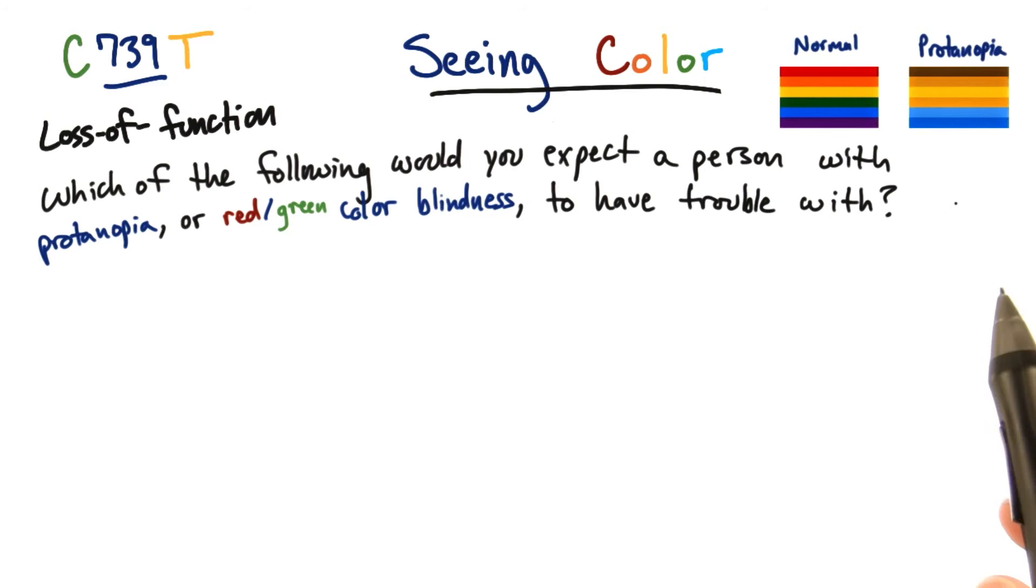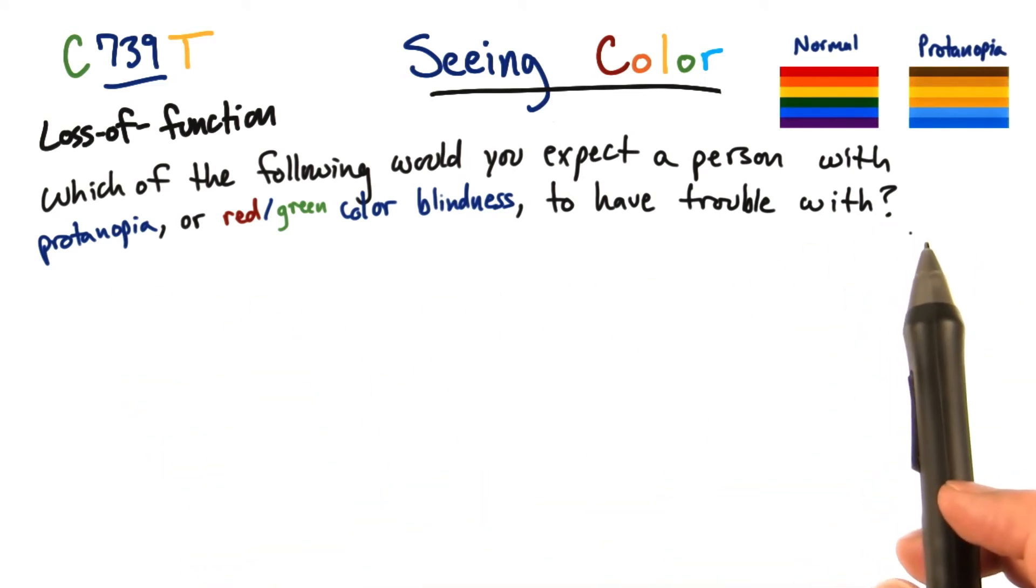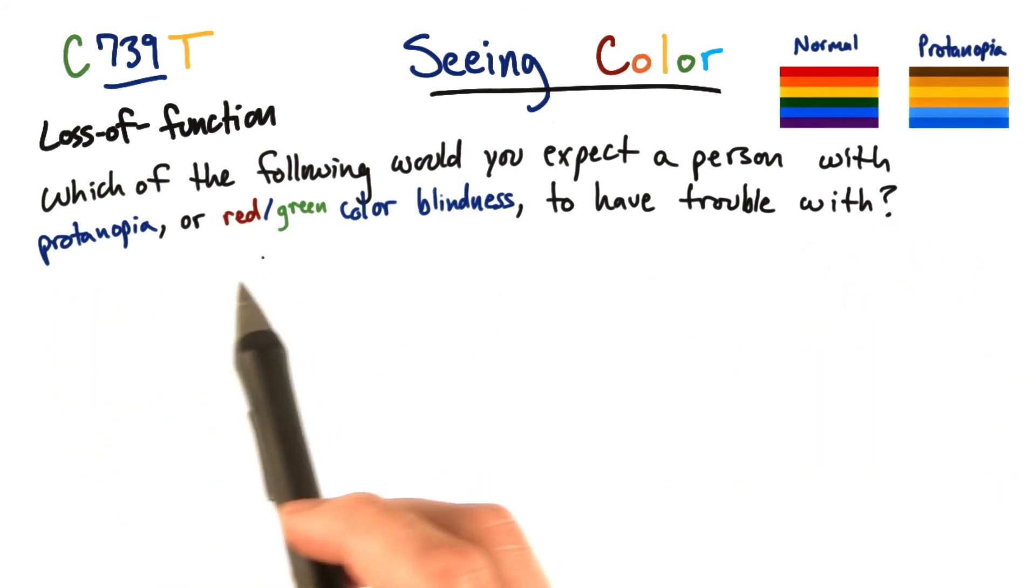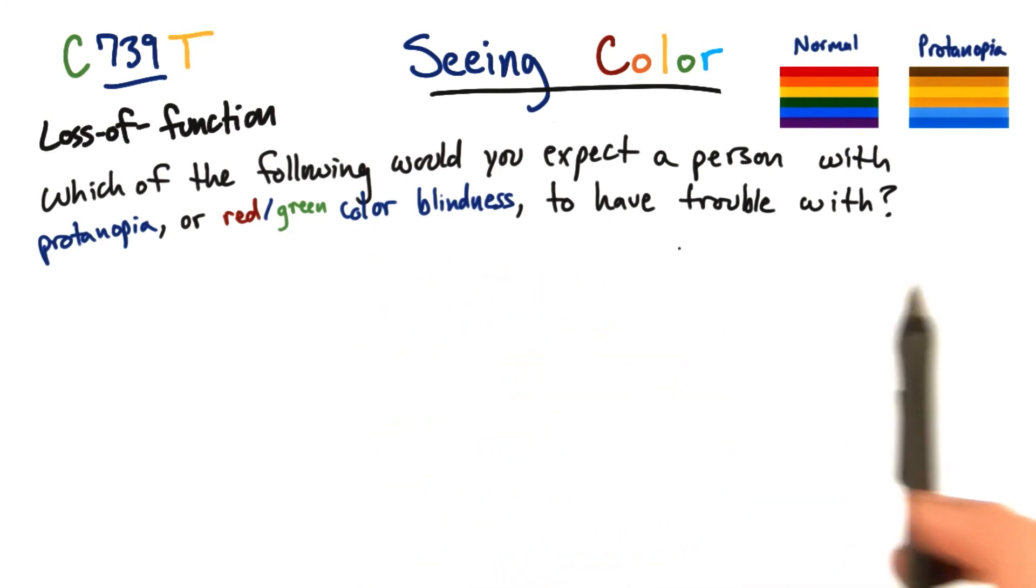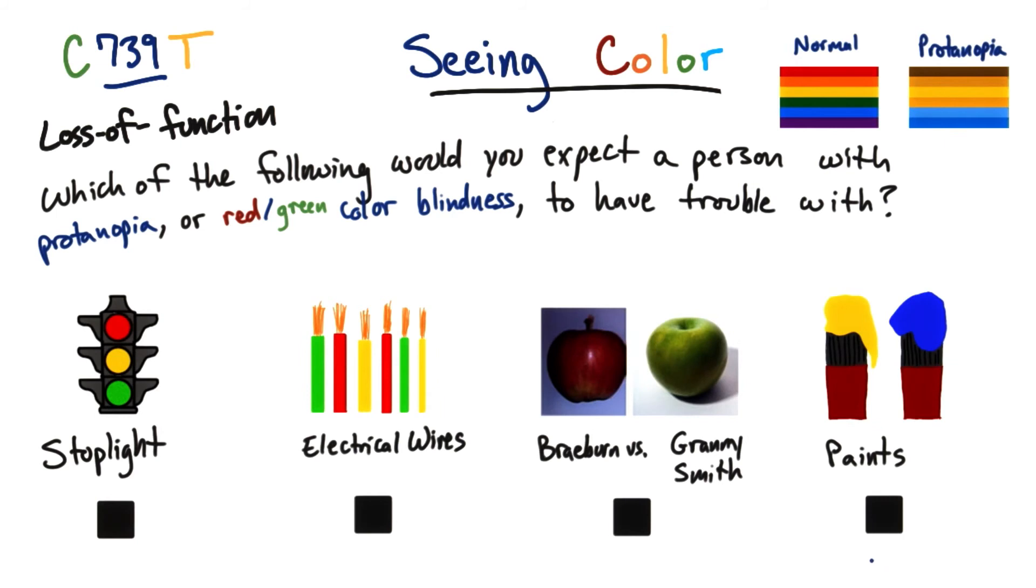Based on the comparison we just did, I want you to tell me which of the following you would expect a person with proteinopia, or red-green color blindness, to have trouble with. Do this based on the colors alone that you see in the examples. Look at each answer individually and check any and all that you think apply.